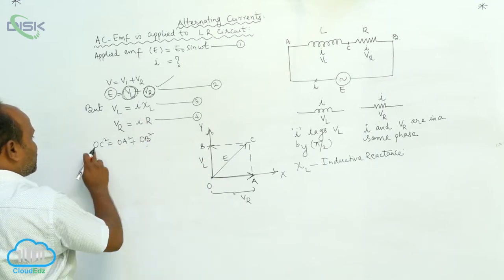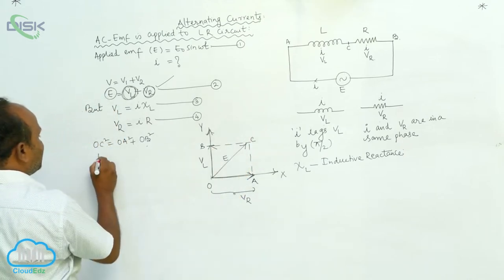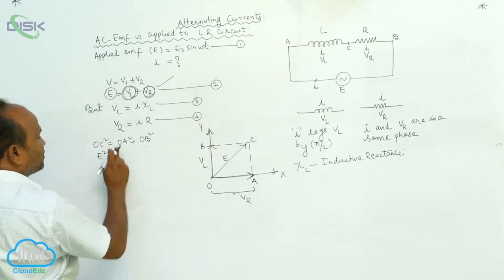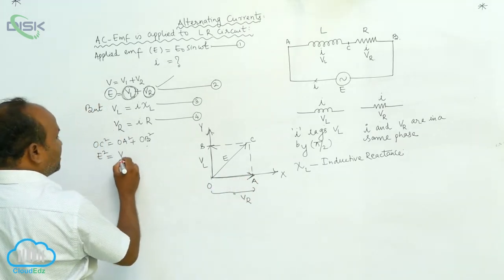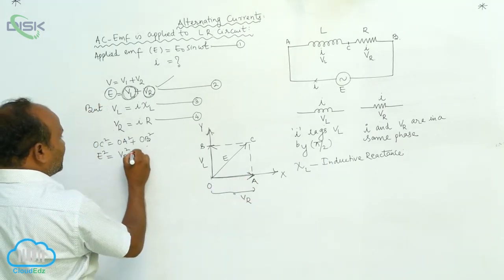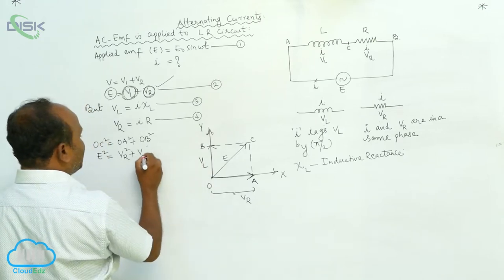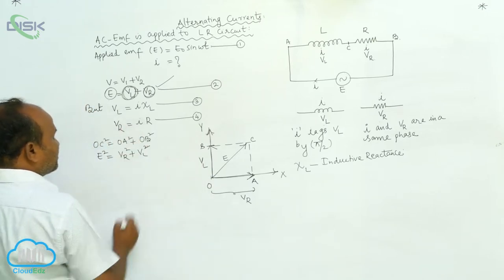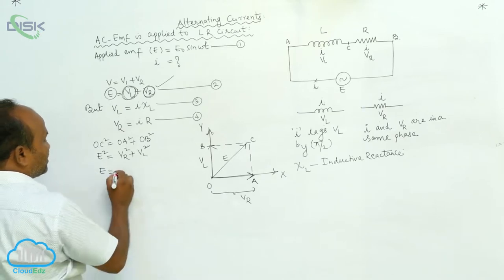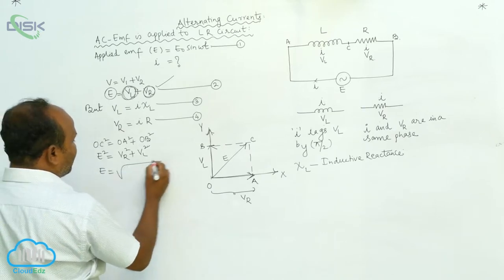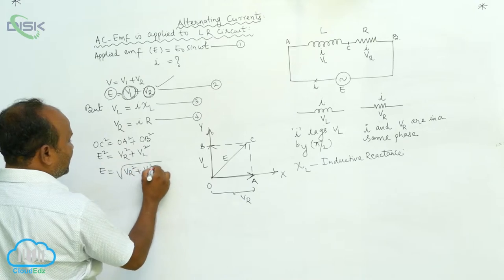OC square equals E square. OA square equals VR square. OB square equals VL square. Therefore, E is equal to the square root of VR square plus VL square.